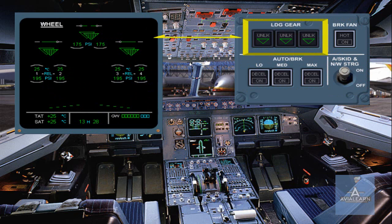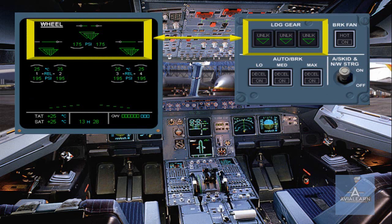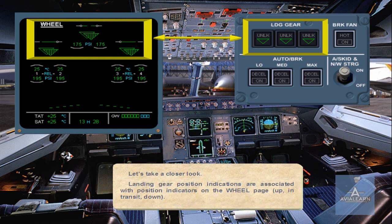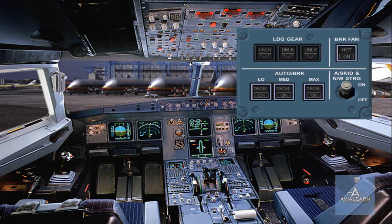Landing gear position indications are associated with position indicators on the wheel page: up, in transit, and down. When auto brakes are used, selection of low, med or max is made using these push button switches.